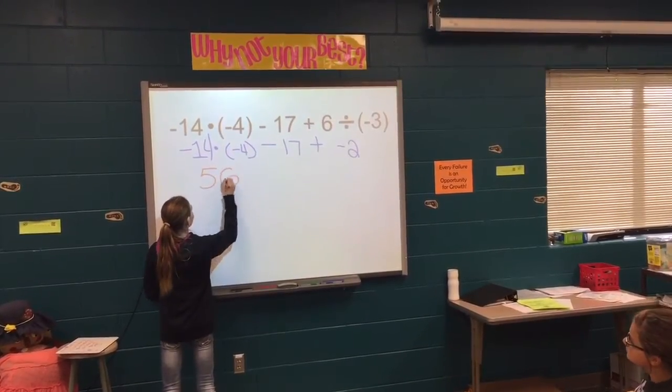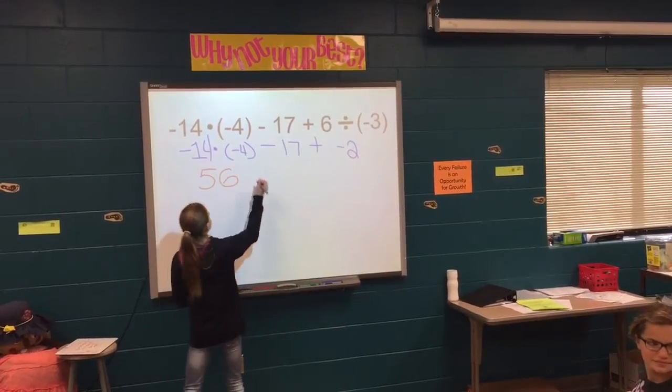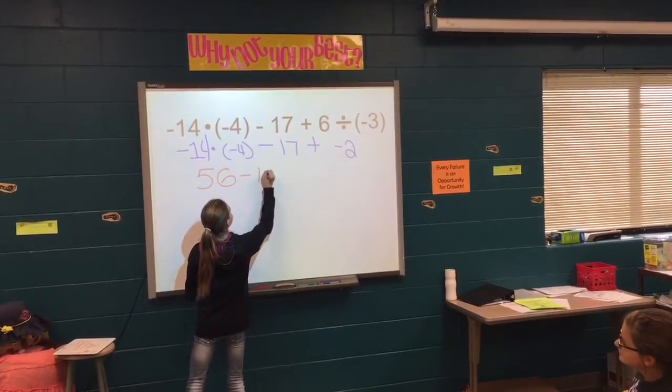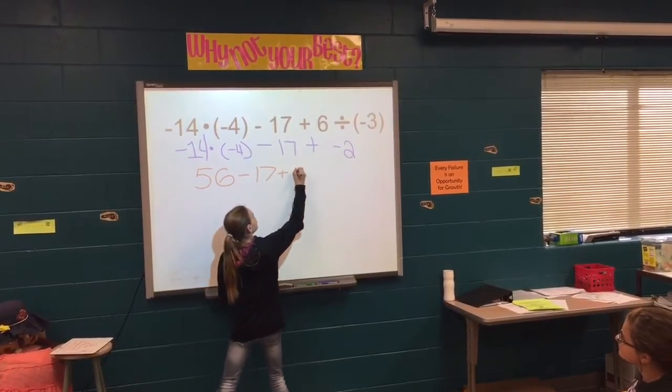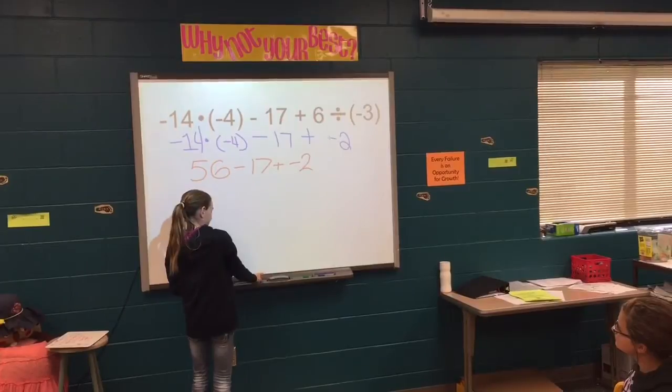Here she's going to write 56 because if you do 14 times 4, if you multiply two negatives together you'll always get a positive, and then she's going to bring everything else down.